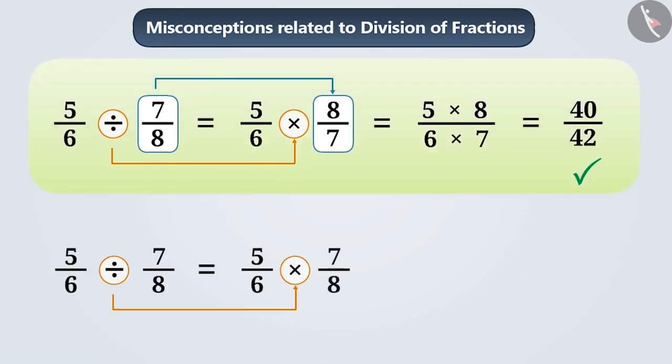However, sometimes they do change the division sign by the multiplication sign but forget to take the reciprocal of the other number and multiply the numbers as they are. If we multiply the numerators in this way, the resultant numerator will be 35 and the denominator will be 48, which is wrong.